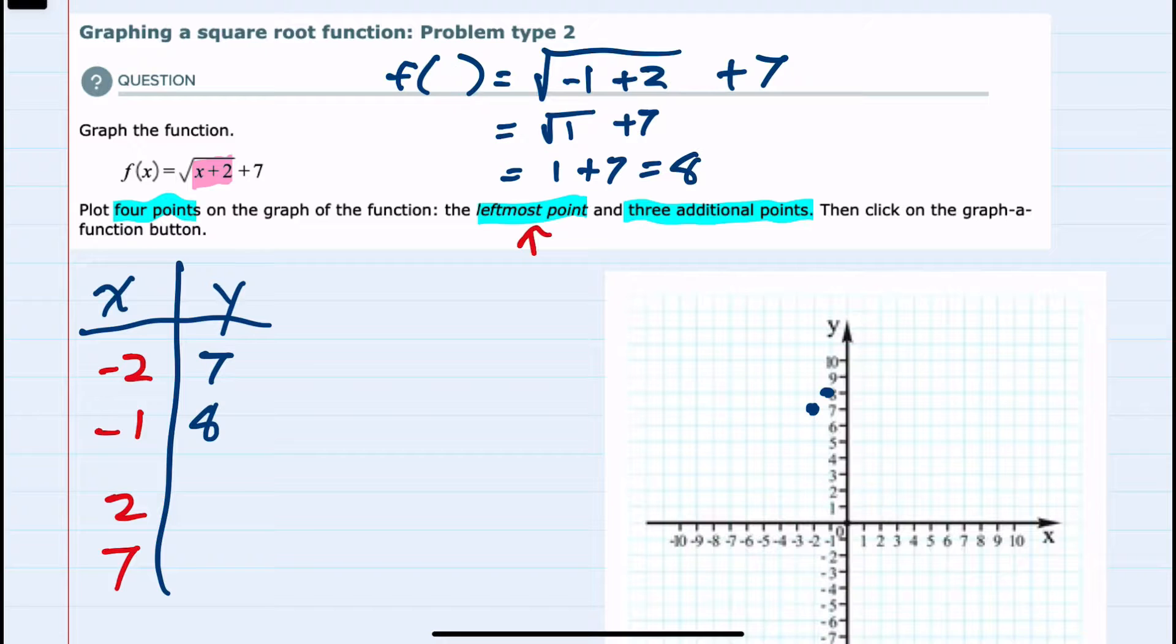Moving to the next x value, we have f of 2, which would be the square root of 2 plus 2. Simplifying to the square root of 4 plus 7 would give us a 2 plus 7, or 9. So we have the coordinate 2, 9.